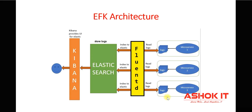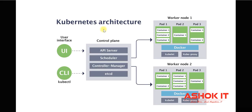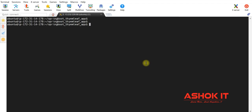Now let me deploy one application in the Kubernetes cluster and perform some operations on it. Once we perform operations, we will use the Kibana dashboard to get the log messages — the Kibana dashboard is going to look like this. I have my Kubernetes cluster in AWS. I have used AWS EKS cluster. You can see the worker nodes running in my cluster.